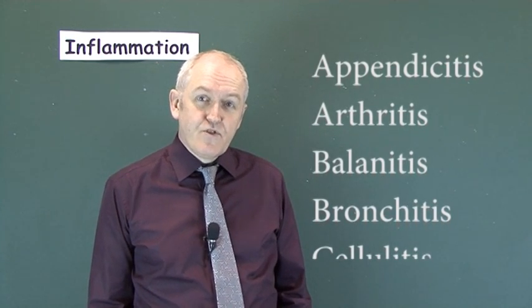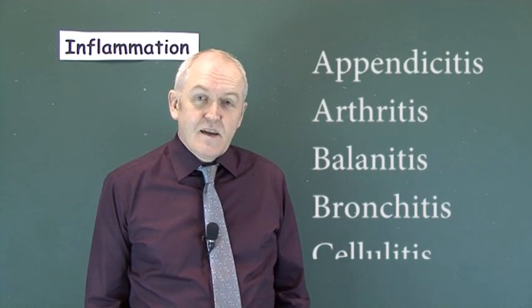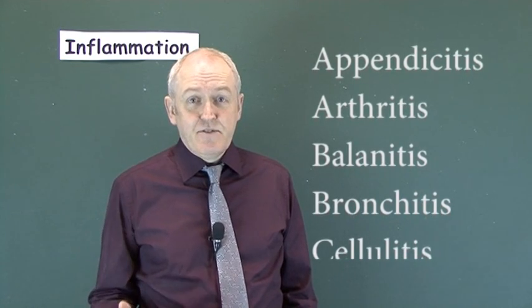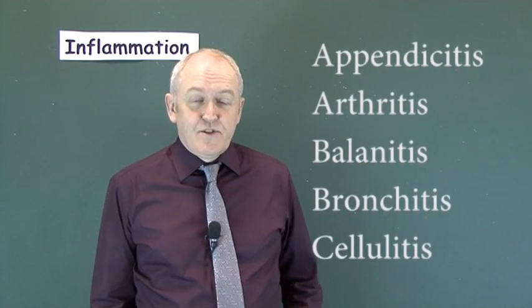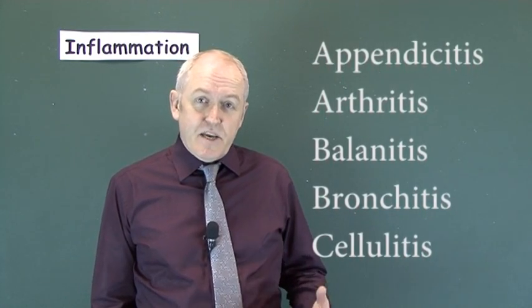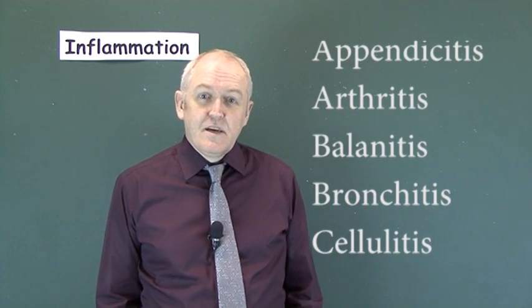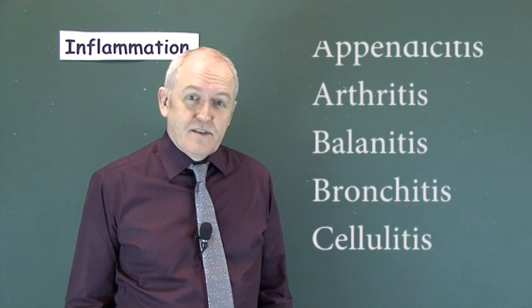The immunological form is rheumatoid arthritis, and the wear-and-tear degenerative form — where the joints degenerate and cartilage is lost — is osteoarthritis.